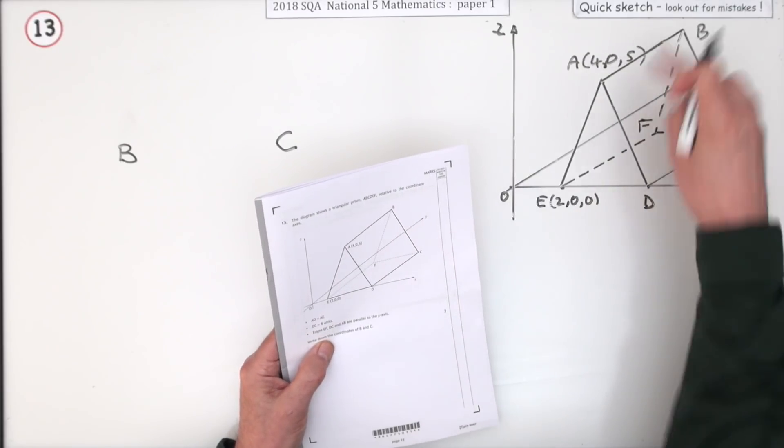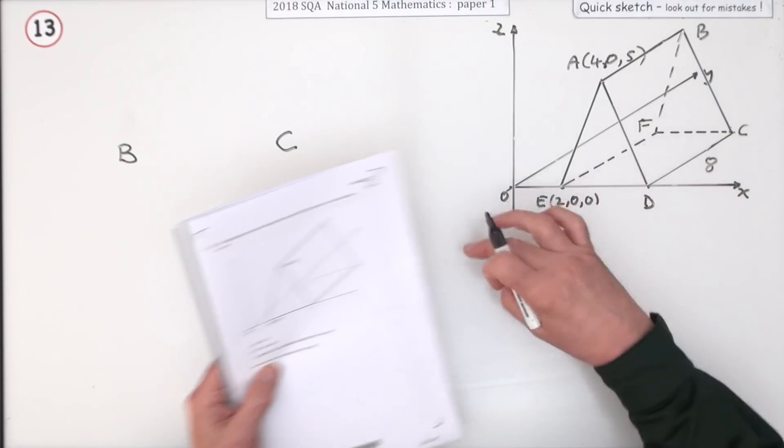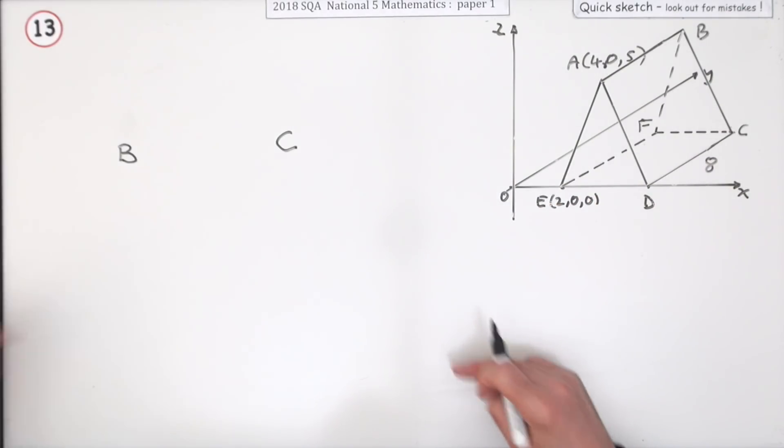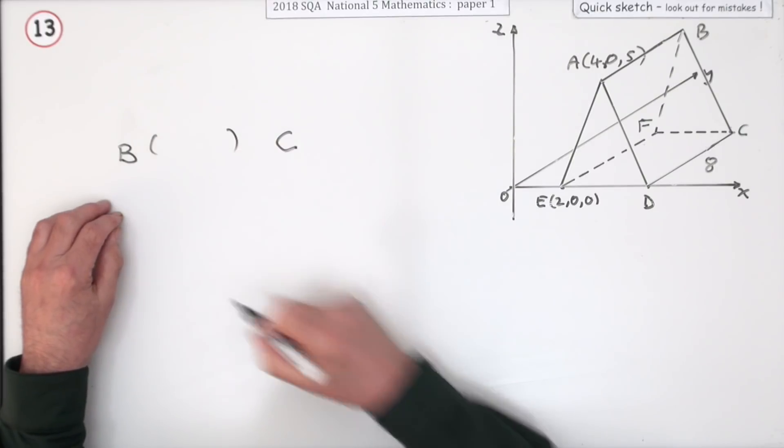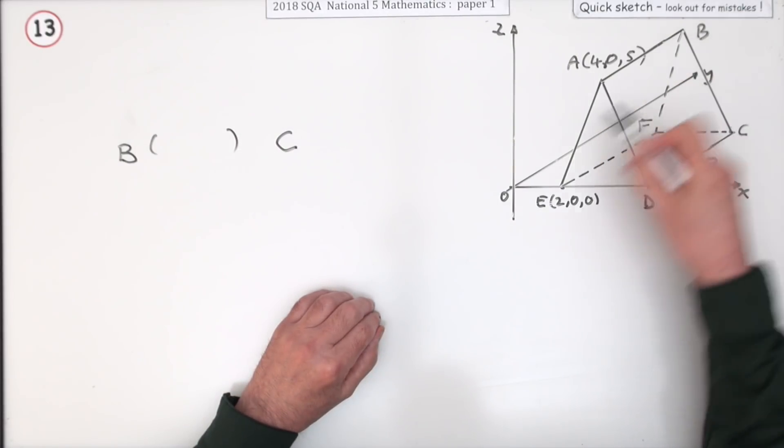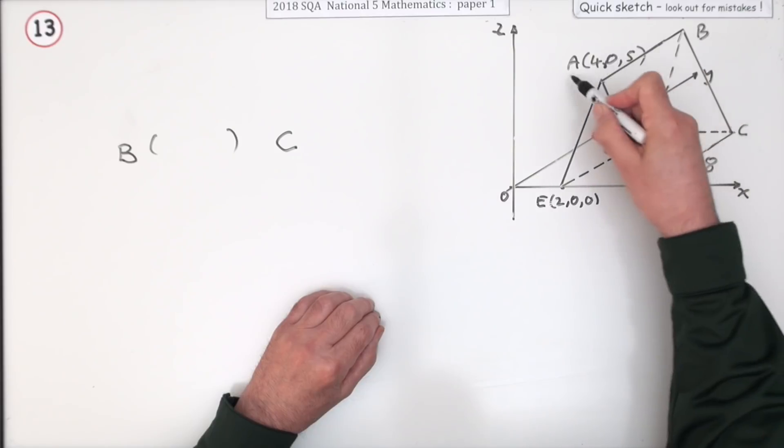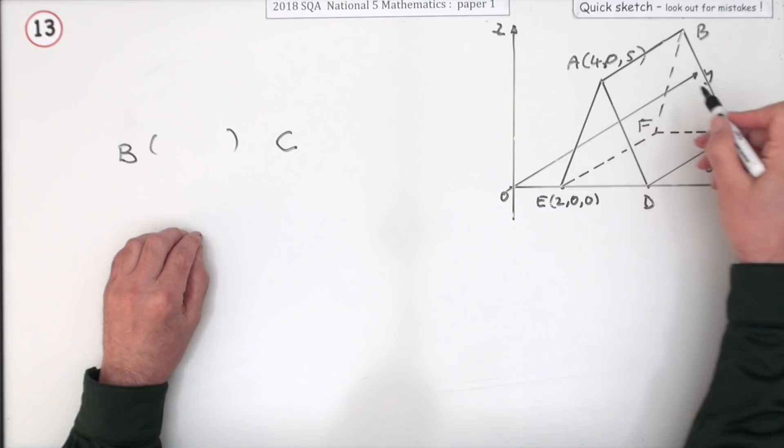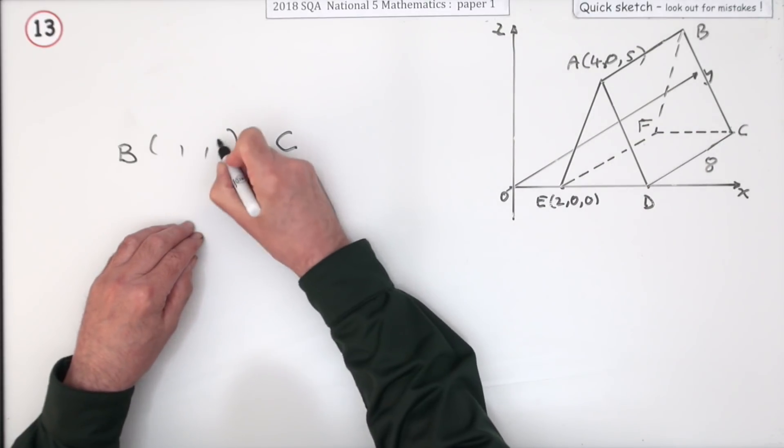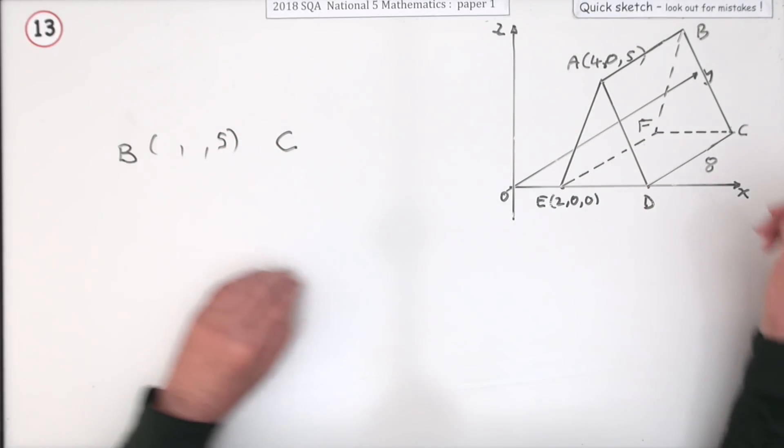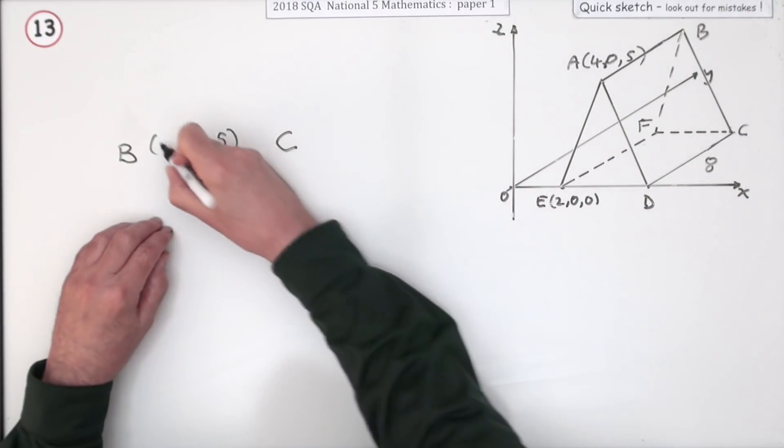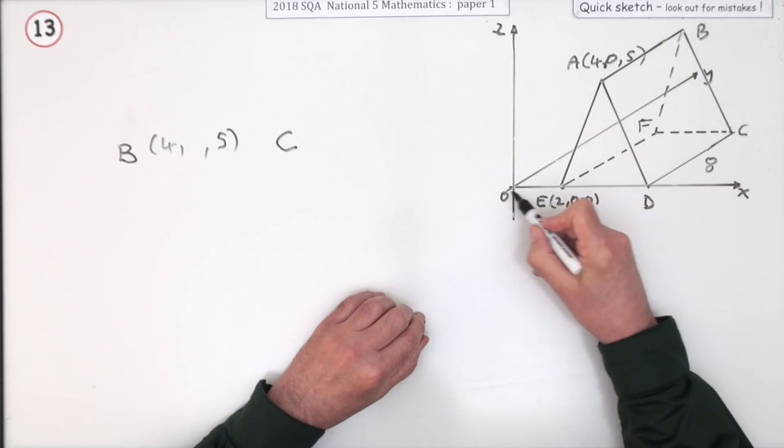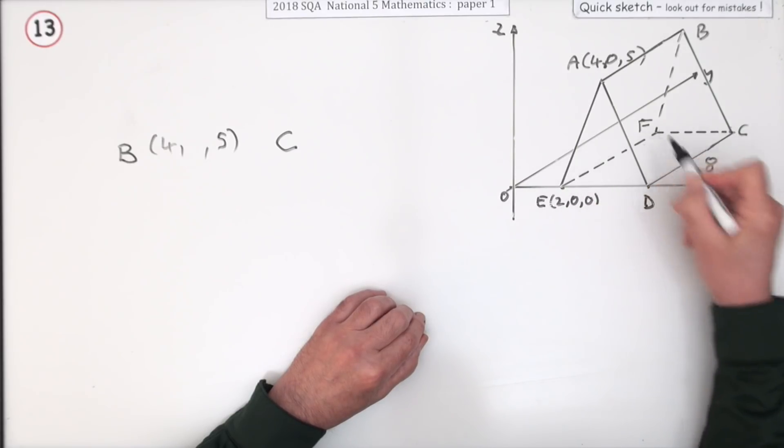What are the coordinates of B and C? Just one mark each. What would we know about B? Well, B is at the top level with A and it's parallel along the y-axis with A, so it's definitely 5 up and definitely 4 along. Those parts will be the same. How far back is it? Well that's the 8, so that should be 4, 8, 5.